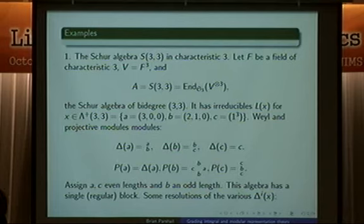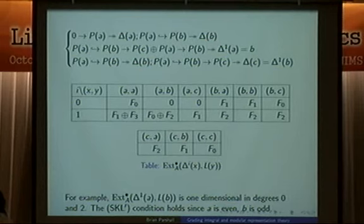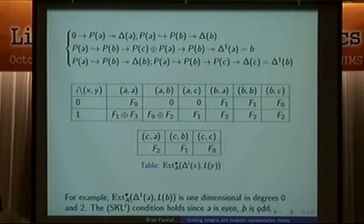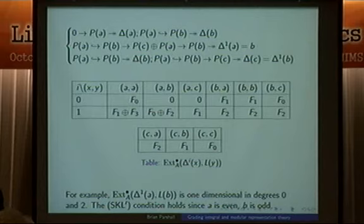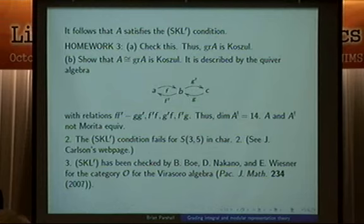The projectives are also easy to figure out. P of A is projective, the projective cover of A is the standard module. Projective cover of B is this thing. And C is the uniserial module. We can assign these things lengths. We just make A and C even and B odd. It's just the parity that's important. And this algebra has a single block.